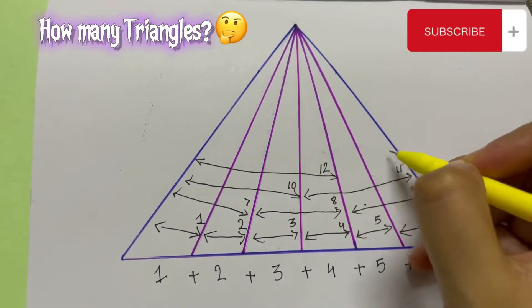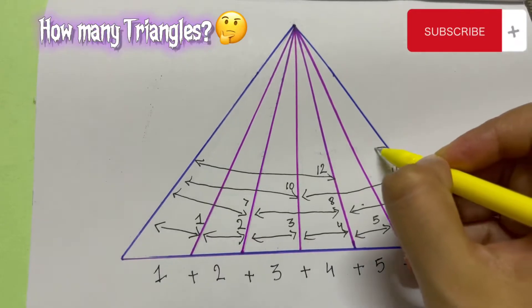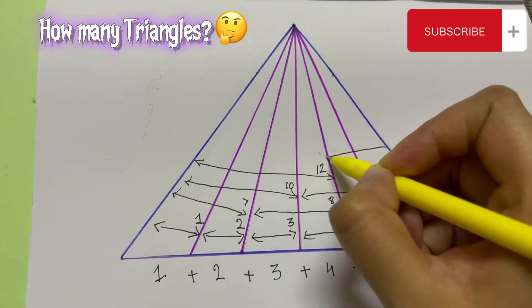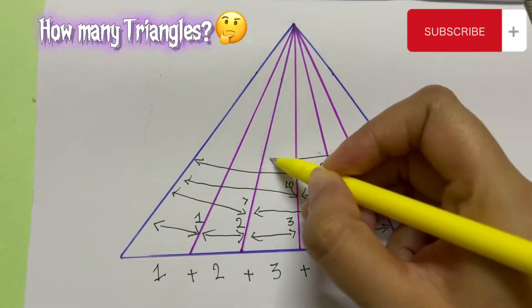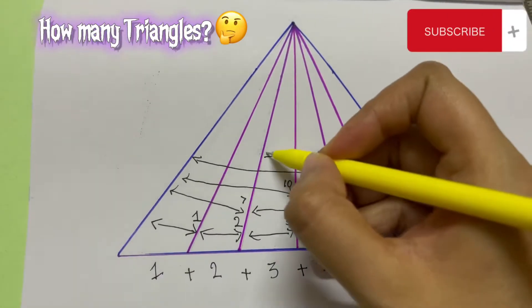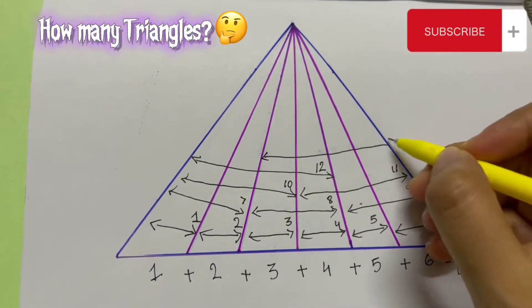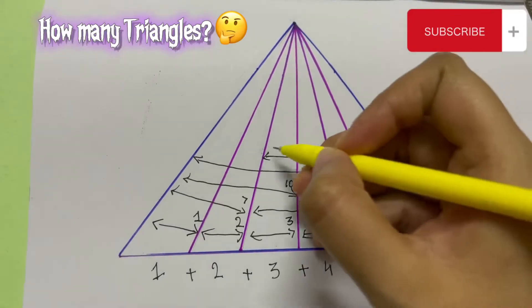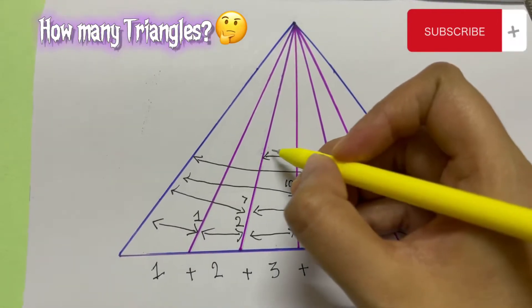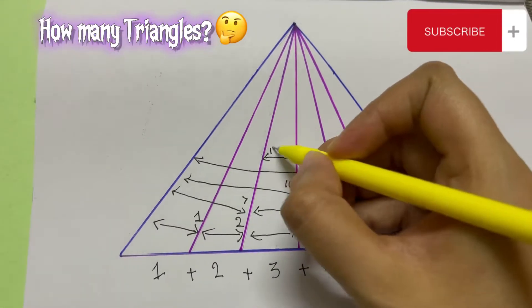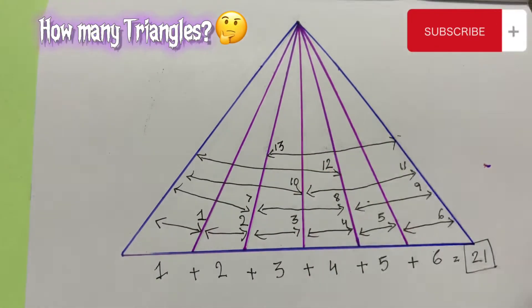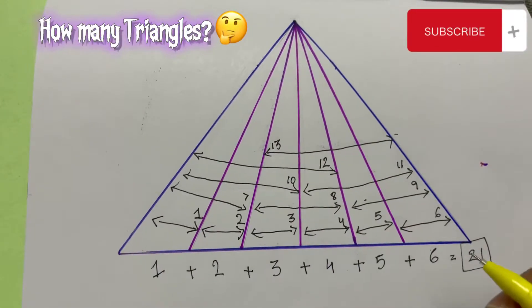And from this side — one, two, three, and four — this makes the thirteenth triangle.